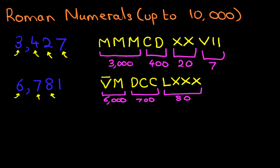And lastly, we've got is 1. How do we write 1? That is just simply an I. So that is how we write down 6,781 in Roman numerals.